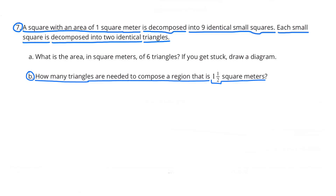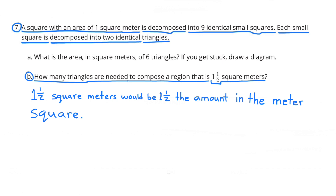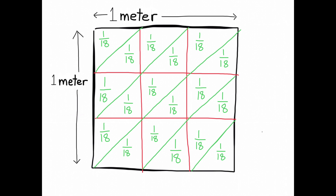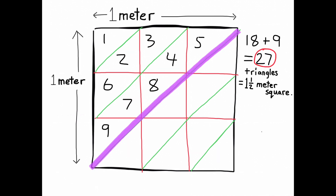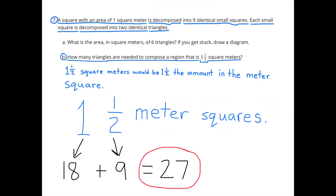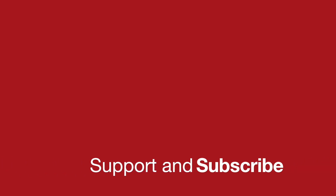B: How many triangles are needed to compose a region that is 1 and a half square meters? 1 and a half square meters would be 1 and a half times the amount of the meter square. Since the meter square held 18 triangles, and 9 is half of 18, 18 plus 9 would be 27. So 1 and a half square meters would hold 27 of these triangles.